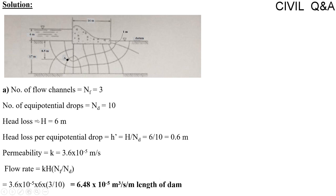The total head loss through the dam is 6 meters, as the upstream water level is 6 meters and downstream water level is zero meters, so total head loss is 6 minus 0 equals 6 meters. The head loss per equipotential drop is total head loss divided by number of equipotential drops: 6 divided by 10 equals 0.6 meters per drop.